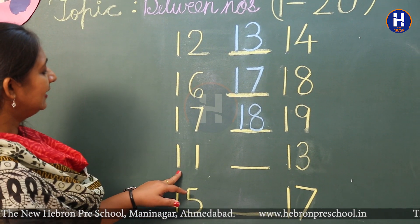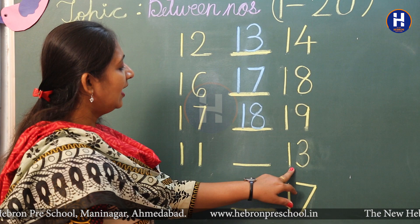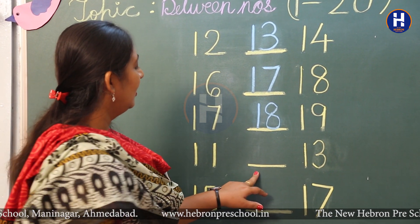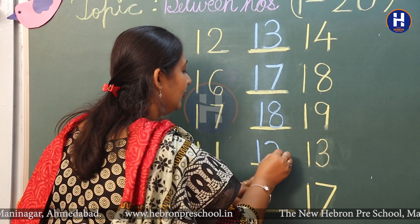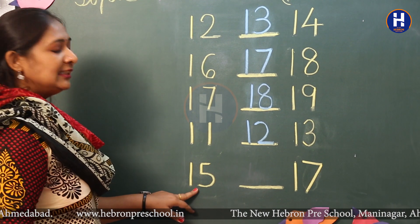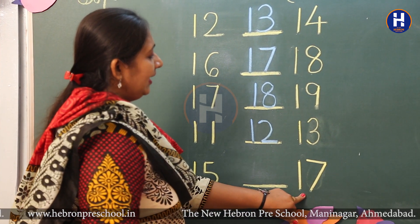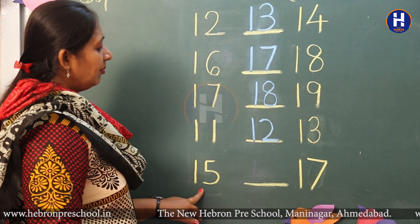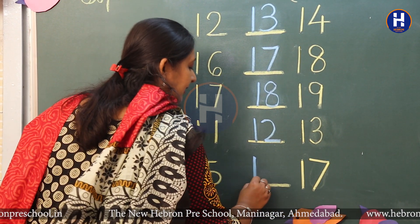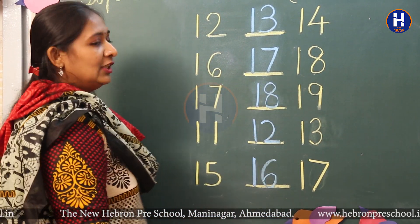Here it is number 11 and here it is number 13. So, what is the between number? It is 12. Next, it is number 15 and number 17. So, what is the between number of 15 and 17? It is 16.